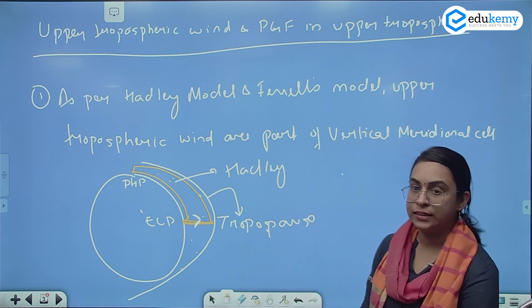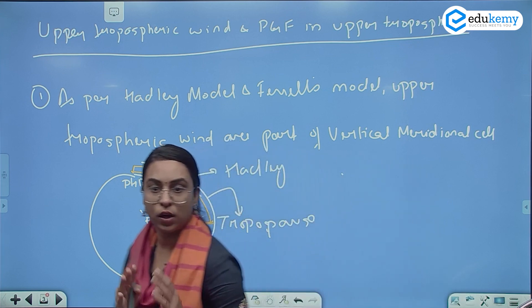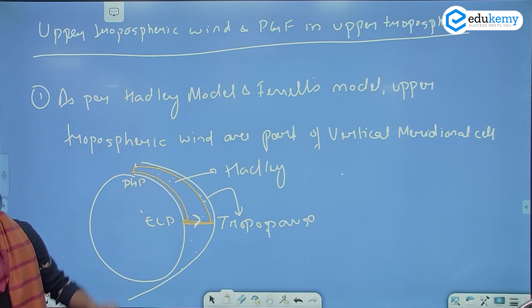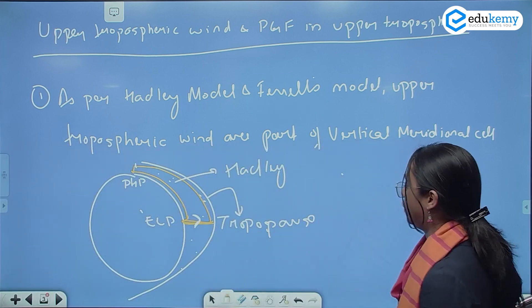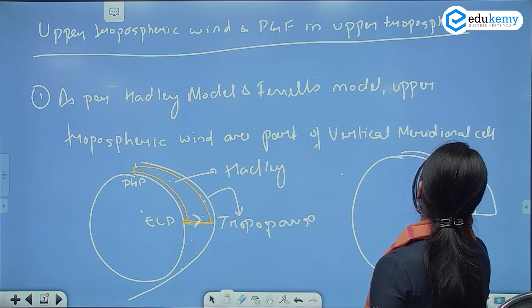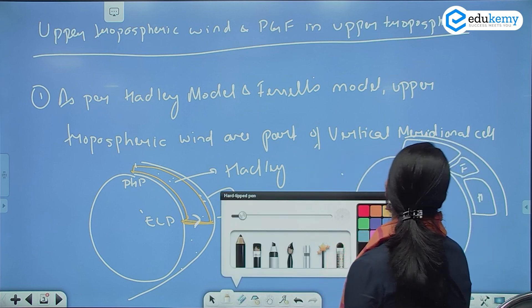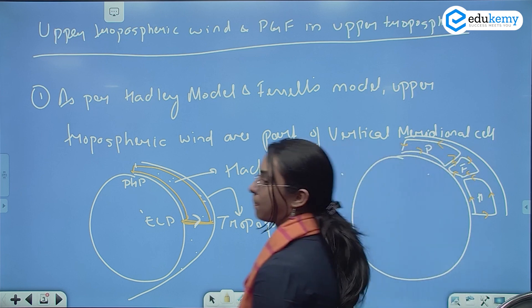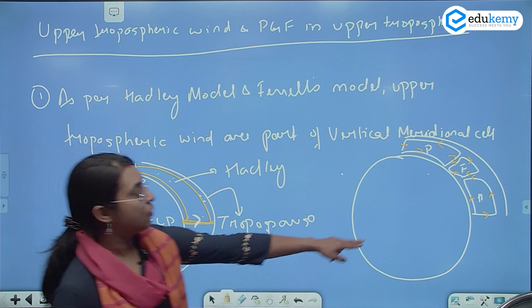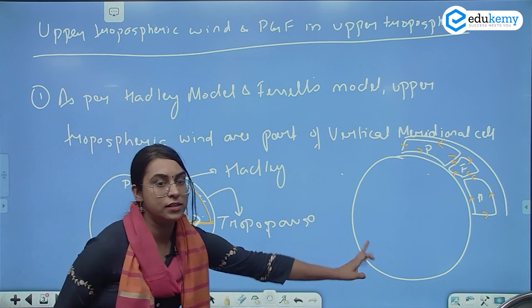So the upper tropospheric wind is a part of this vertical meridional cell — that's what Hadley said. We have Hadley's cell, Ferrell's cell, and polar cell. In Ferrell's model, wind rises, goes along, sinks, and rises again. Basically, both Hadley and Ferrell say that the upper tropospheric winds are part of the vertical meridional cells.